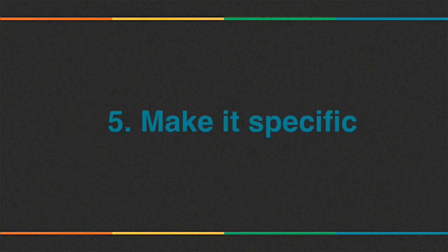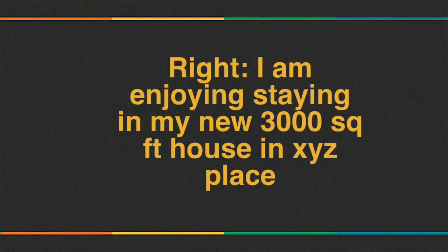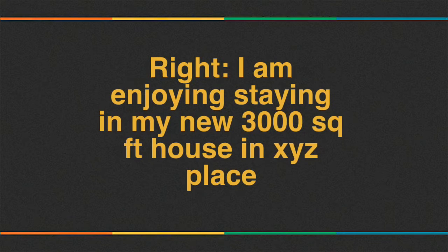Guideline number 5: Make it specific. For example, this is the wrong affirmation: 'I am joyfully enjoying staying in new house.' The right affirmation would be 'I am enjoying staying in my new 3000 square foot house in XYZ place.' And you can add further specifications.